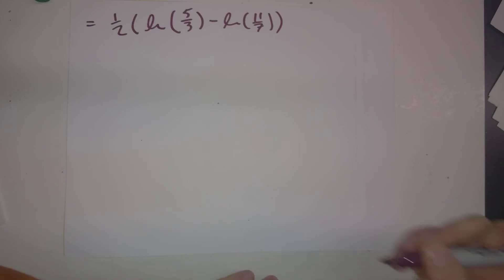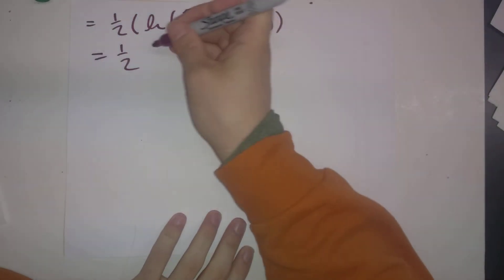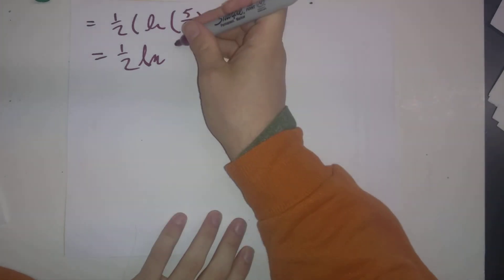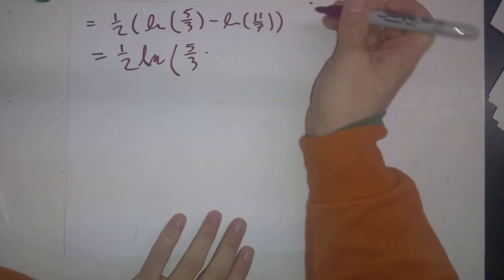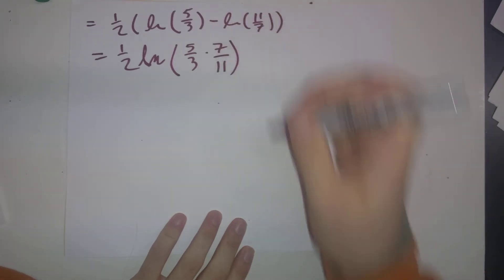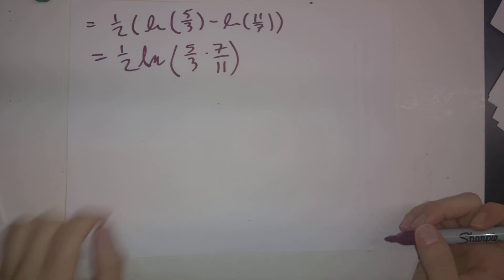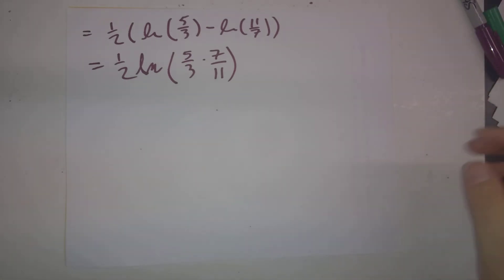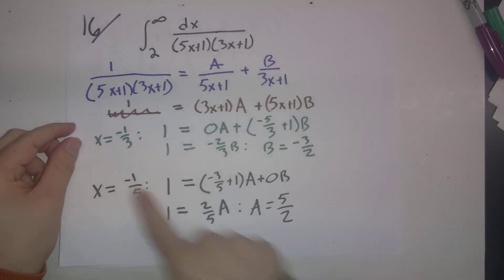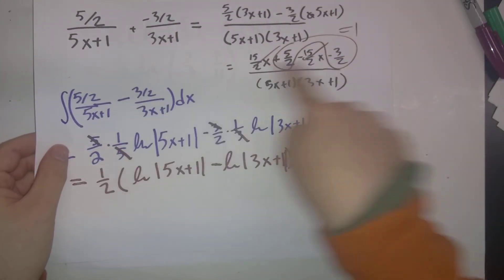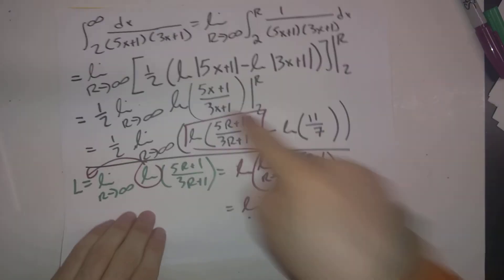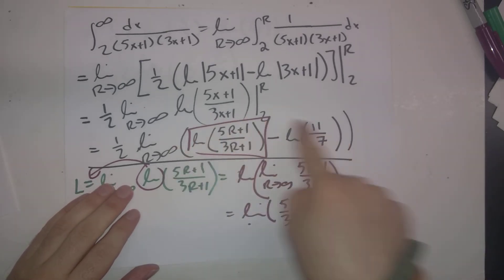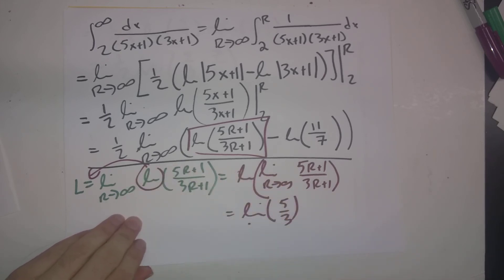To make the answer a bit nicer, we combine the two logs: ln(5/3) − ln(11/7) = ln(5/3 · 7/11) = ln(35/33). So the final answer is (1/2)·ln(35/33). This was a long problem, but a good one because it combines partial fractions, improper integral setup with limits as r→∞, and natural log rules in multiple places.